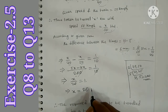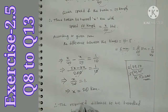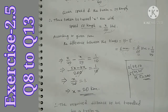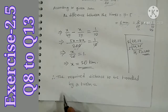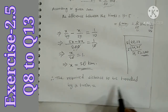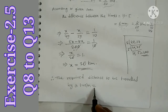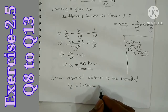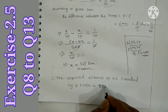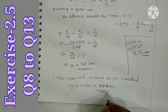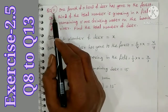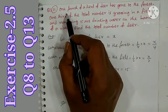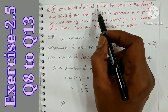So x equals 20. The required distance to be covered by the train is 20 kilometers.